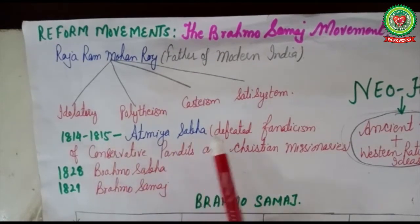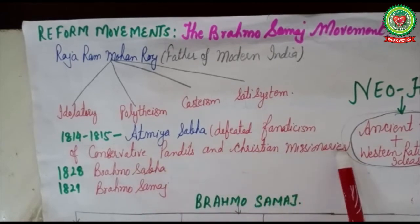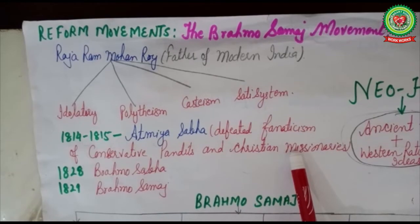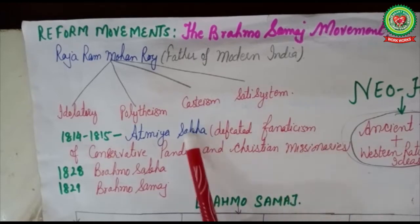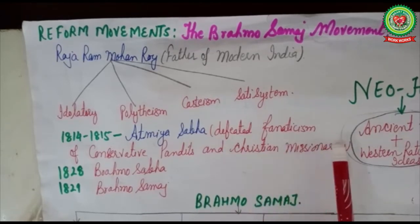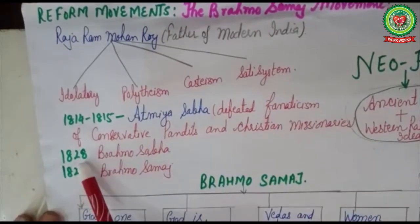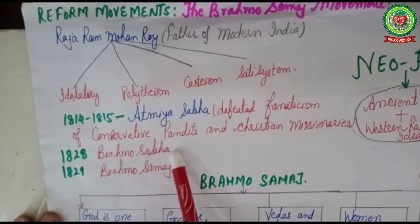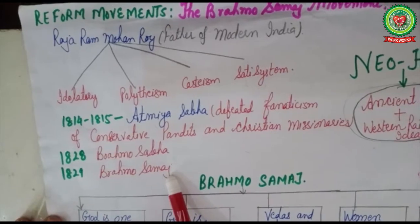To bring reforms in India, Raja Ram Mohan Roy in 1814–1815 set up the Atmiya Sabha, where he defeated the fanaticism of conservative pandits and Christian missionaries — those who believed their religion alone was supreme. He told people that all religions treat human beings equally and all religions are basically the same.